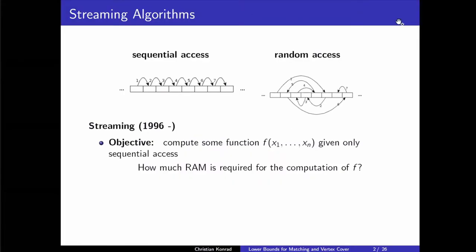It almost feels like this slide is absolutely unnecessary when I present this to you. I'm sure that everyone is aware of what the data streaming model is. A streaming algorithm is characterized by sequential access. What we're interested in is designing data streaming algorithms that compute some sort of function having only sequential access — the algorithm sees items one by one. While we go over the stream, the goal is to compute some function, but we want to minimize the random access memory that our algorithm uses. Our focus is on space here.